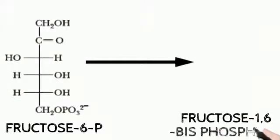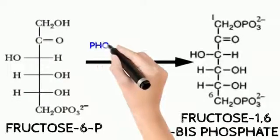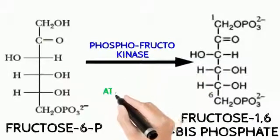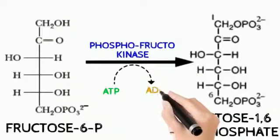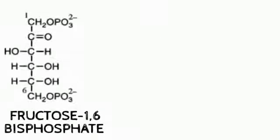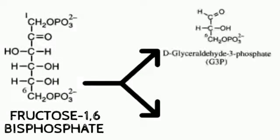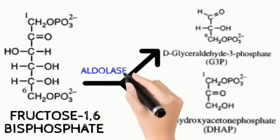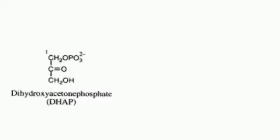The third step involves conversion of fructose-6-phosphate to fructose-1,6-bisphosphate. This is an addition of another phosphate, meaning utilization of another ATP molecule; the enzyme is phosphofructokinase. In the next step, fructose-1,6-bisphosphate is split into two molecules: glyceraldehyde-3-phosphate and dihydroxyacetone phosphate, both three-carbon compounds. The enzyme is aldolase. A fifth step then converts dihydroxyacetone phosphate into glyceraldehyde-3-phosphate.